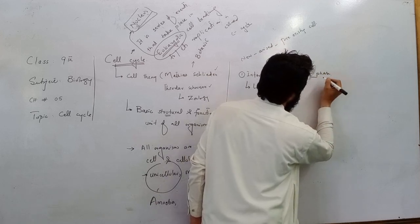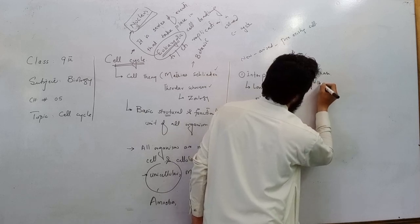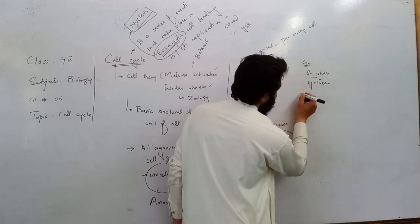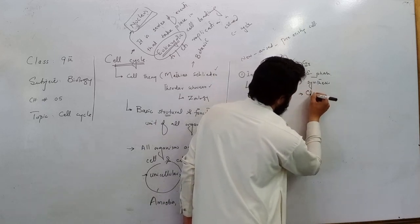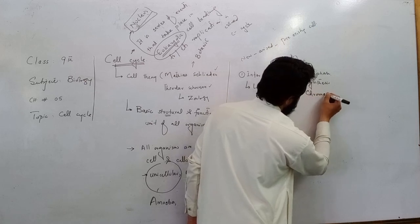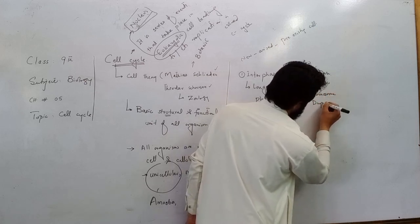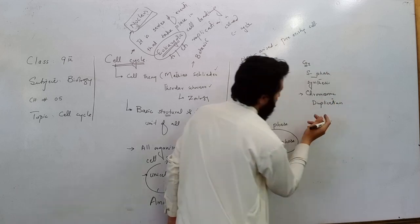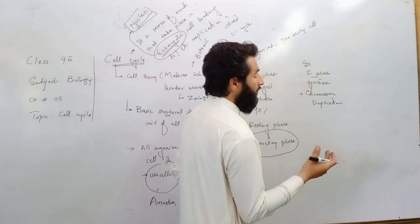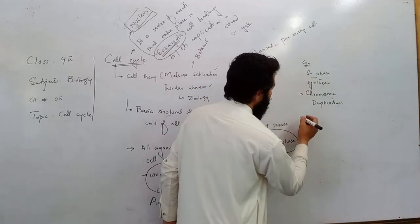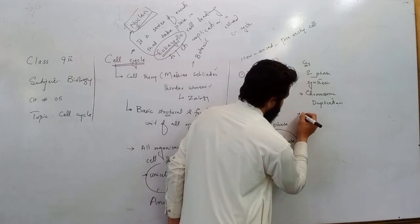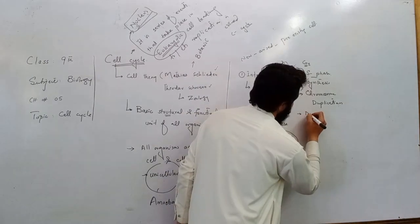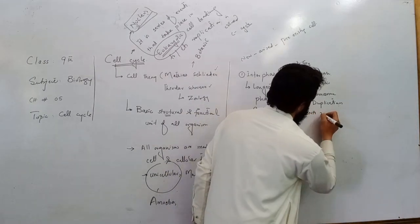The S phase involves DNA synthesis. During S phase, chromosome duplication occurs — the chromosome number doubles and DNA replication starts. DNA replication is the main event of the S phase.